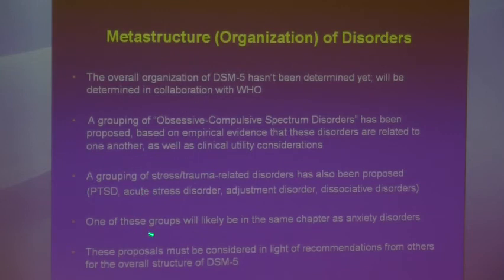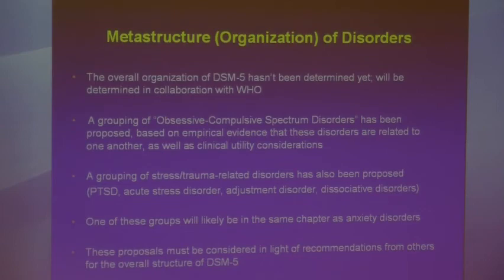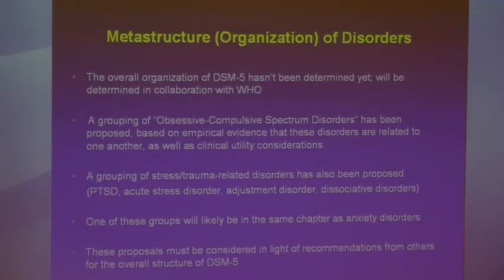One of these two groups will probably be in the same chapter as anxiety disorders, as there are a limited number of chapters in DSM-5. There are arguments both ways given relationships between PTSD, acute stress disorder, and the anxiety disorders, and between OCD, BDD, and some anxiety disorders. It's still unclear what the final recommendation will be. Any proposals for how DSM chapters are organized must account for all other chapters — it's a big puzzle of how all disorders fit together, and the international WHO perspective is critically important.